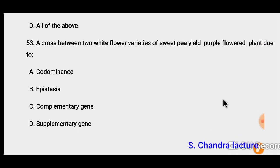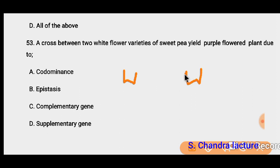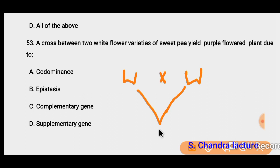Question 53: A cross between two white flower varieties of sweet pea yields purple flowers. When these two white flowers are crossed, the resulting flower is purple. This is an example of complementary gene interaction.